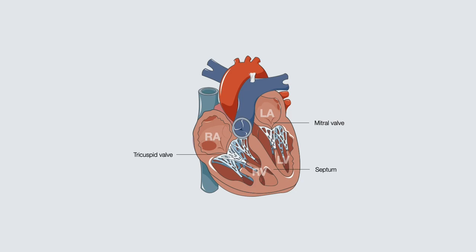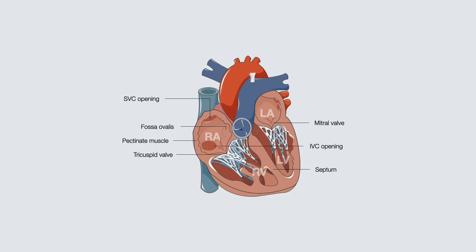In the right atrium, you'll observe the openings for the superior and inferior vena cava and the fossa ovalis, which is where the foramen ovale once was and closed after birth. The atrium wall is lined by pectinate muscle, which has a tooth-comb appearance due to horizontal muscle ridges. Separating the right atrium and ventricle is the tricuspid valve, which has three cusps. These cusps are attached to papillary muscles via the chordae tendineae. The papillary muscles serve to ensure the valves remain closed during systole to prevent backflow of blood into the atria during ventricular contraction.